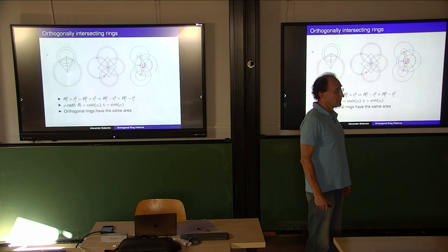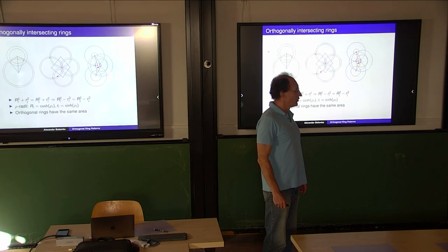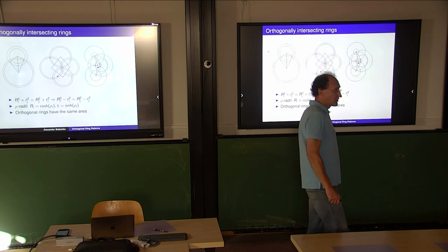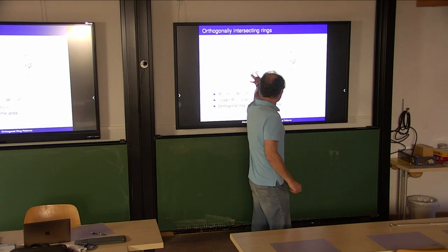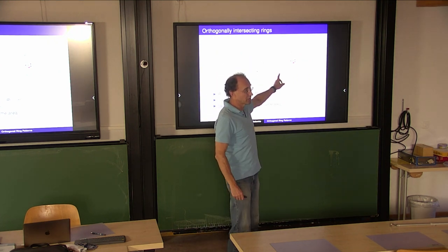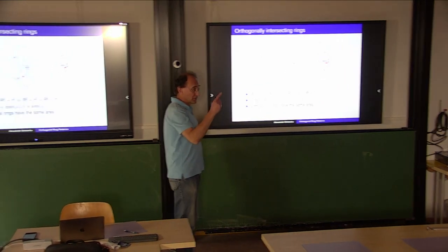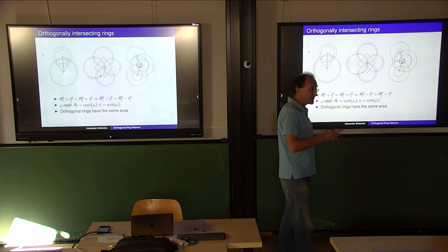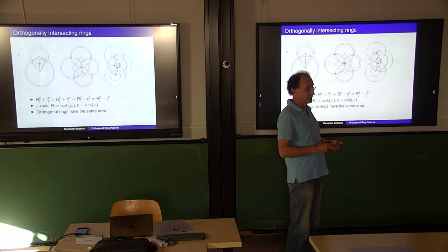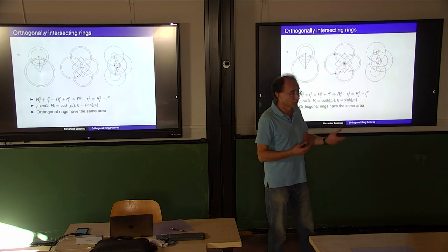Question: the Hirota equation has many solutions - in this case, is this just one particular solution? No, many solutions. These pictures have nothing to do with Hirota; Hirota was the case of circle patterns. Now we are talking about ring patterns, so I don't compare the equations. Any solution of the Hirota equation gives you such a circle pattern. But if your solution is generic, then these circles will be alternating and this is a mess. We are interested in special solutions.